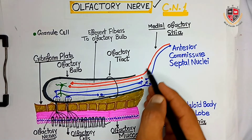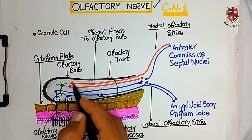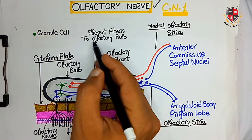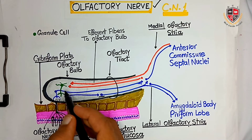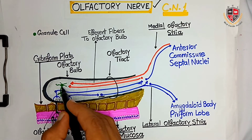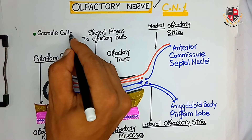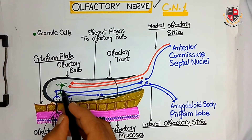These are the efferent fibers projecting to the olfactory bulb. And these are the granule cells located within the olfactory bulb.